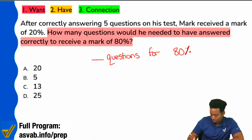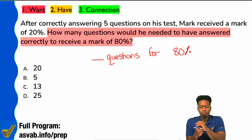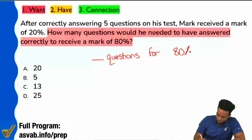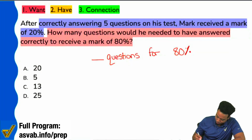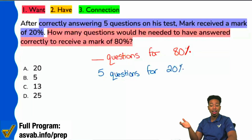We would need blank questions for 80%. Is that okay with you? Writing it out like that, expressing it like that — does that make sense? So next up, let's go ahead and see what information we're given. Here in blue, we see that after correctly answering five questions on the test, Mark received a mark of 20%. So we can say that five questions correct will give you 20%. Not very great, but that's the fact of the matter.